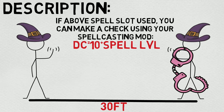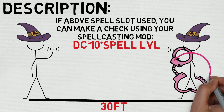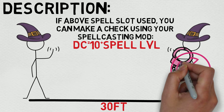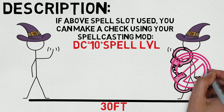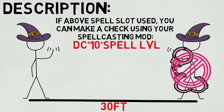Now let's look at some Sage Advice rulings. The first: can Dispel Magic dispel magical effects like a vampire's charm ability or a druid's Wild Shape? Sadly, it cannot. This spell is strictly meant to affect spells — that's it. If it's a spell-like ability, no cigar. That's just the way it is.